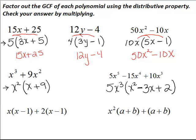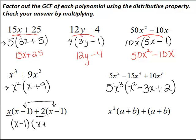Looking at the next two examples, we notice something nice: both terms contain x minus 1. The binomial x minus 1 is being multiplied by both of these, so the greatest common factor is x minus 1. Writing x minus 1 out front, what's left is x plus 2. So the factored form is x minus 1 times the quantity x plus 2.